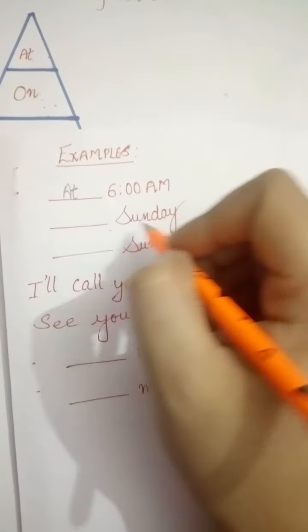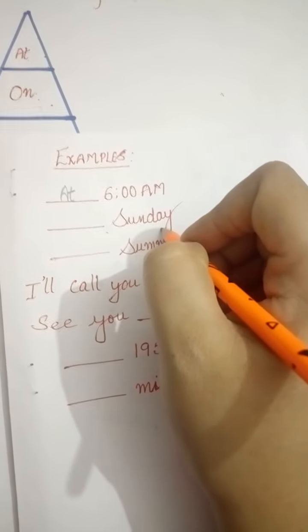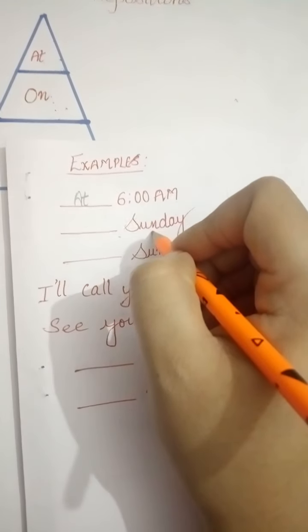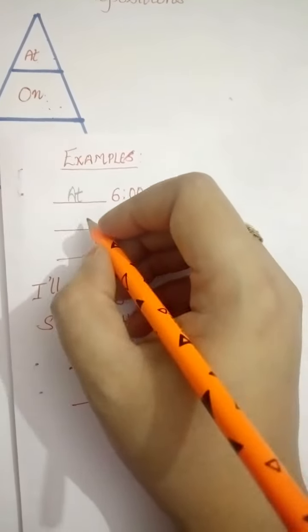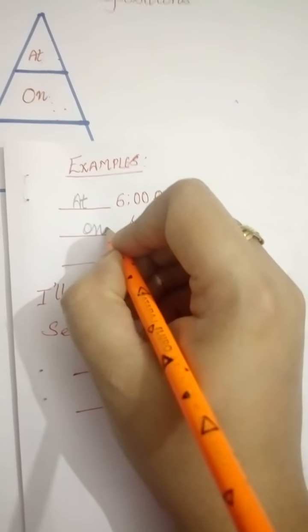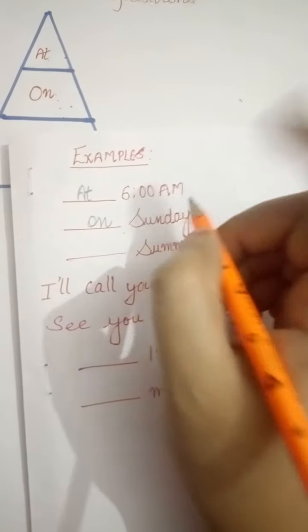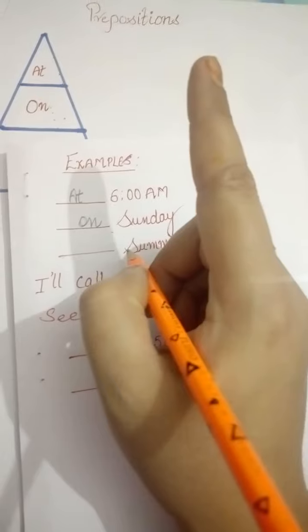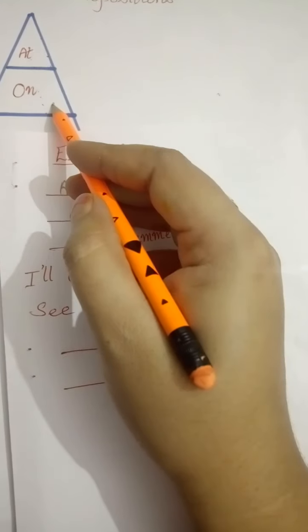The second one is dash Sunday. So, on Sunday. Sunday means one day, and for one day we use the preposition on.